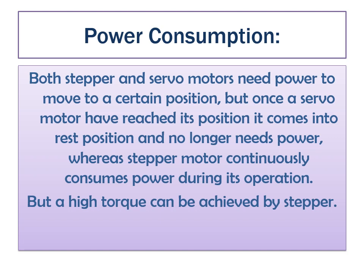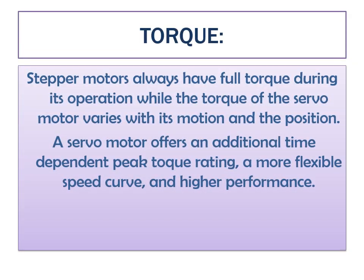A high torque can be achieved by stepper motors compared to servo motors. One of the major differences between them is the torque they produce. Stepper motors always have full torque during operation, while the torque of a servo motor varies with its motion and position. A servo motor also offers an additional time-dependent peak torque rating, a more flexible speed curve, and high performance.